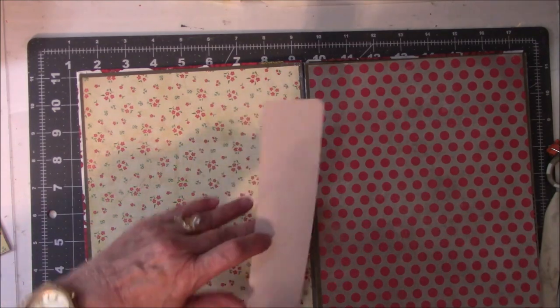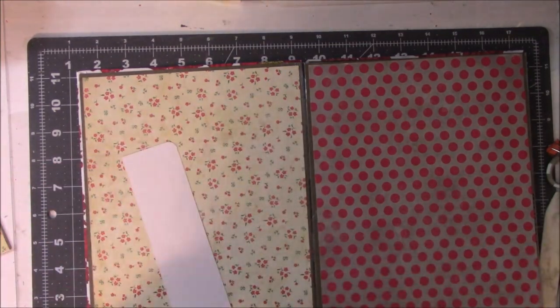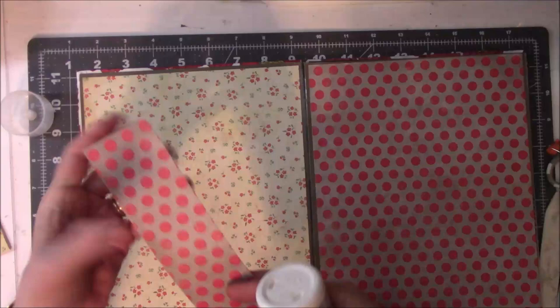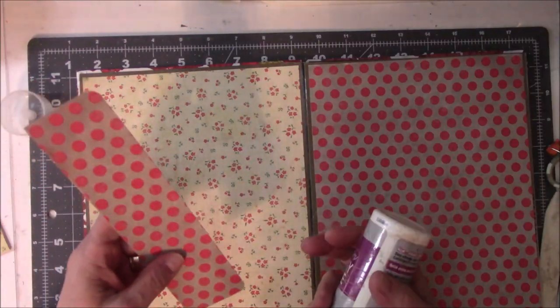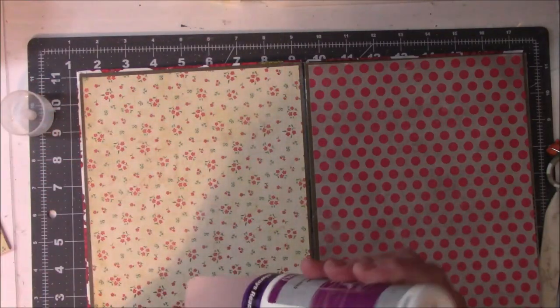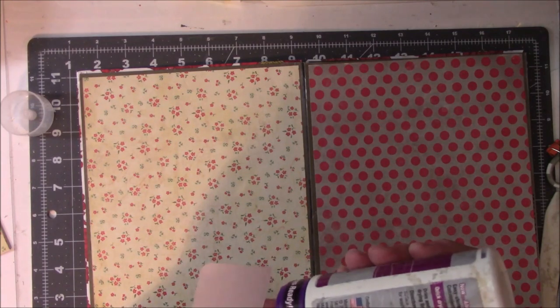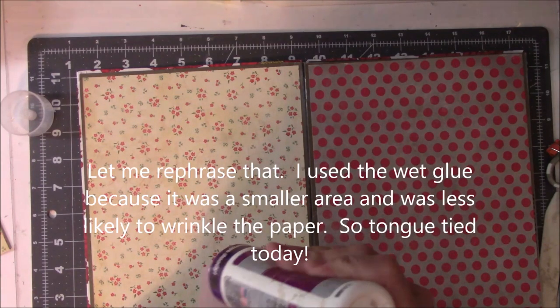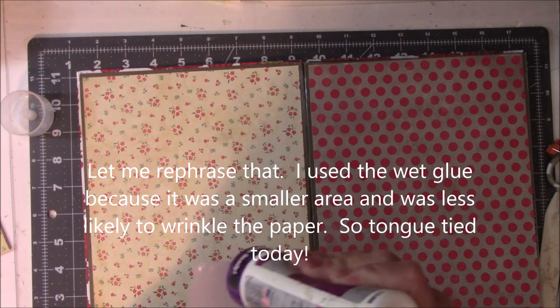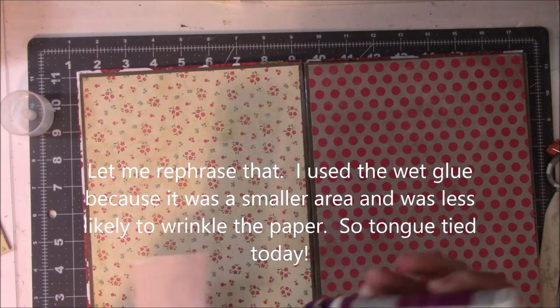Since it was already cut in the proper width, they just fit right on there like a charm. I did take a corner rounder and I cut or clipped off two of the sides to round them off to make it more pleasing to look at. I did use wet glue for this because it wasn't a large space so I didn't really care that much about wrinkles.